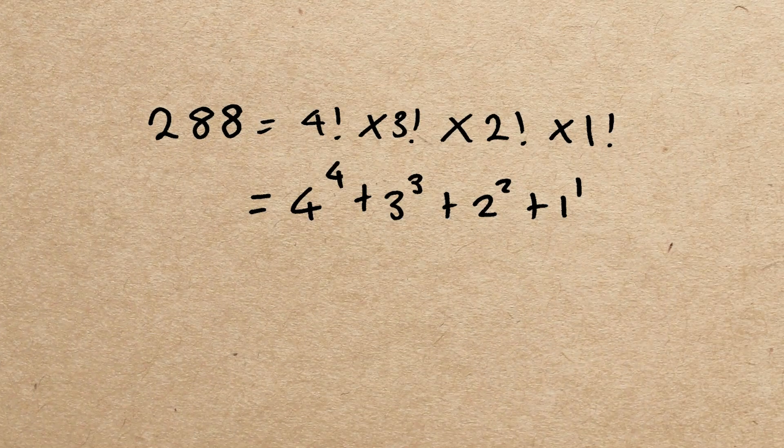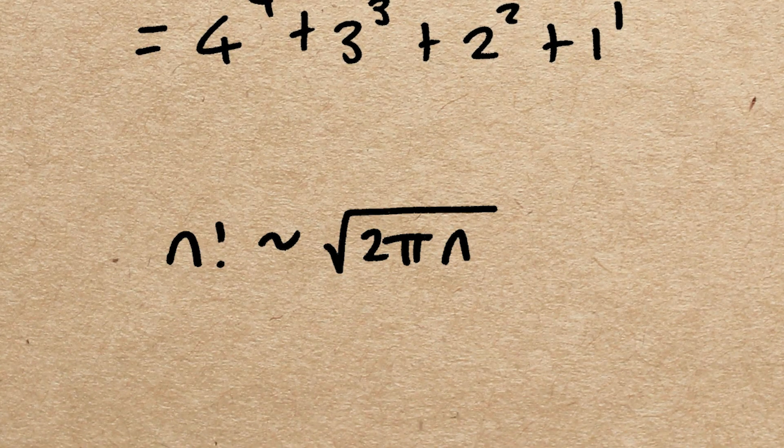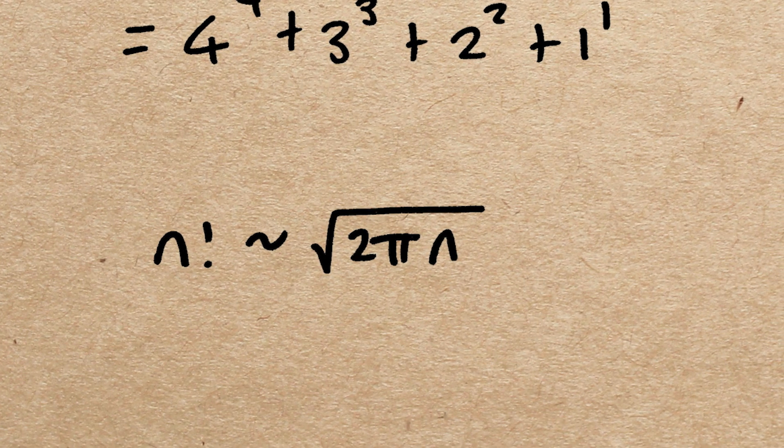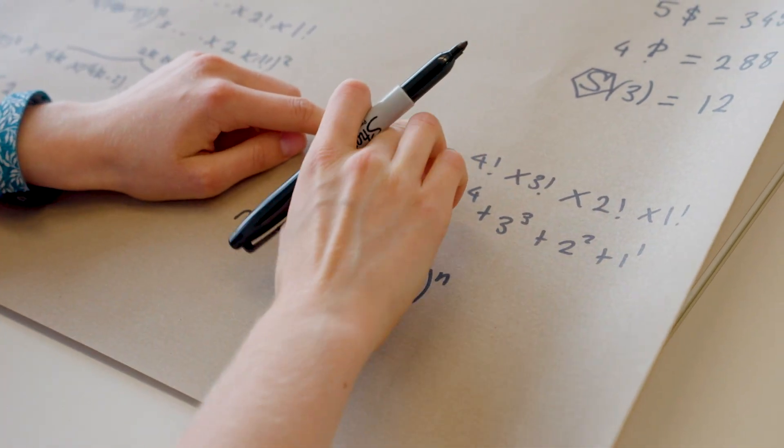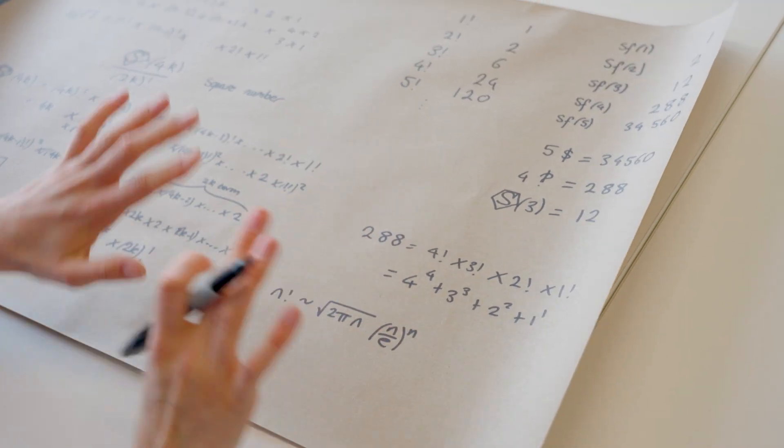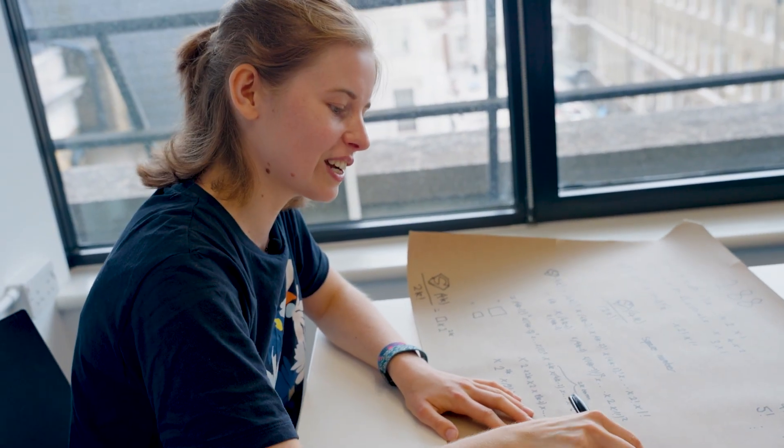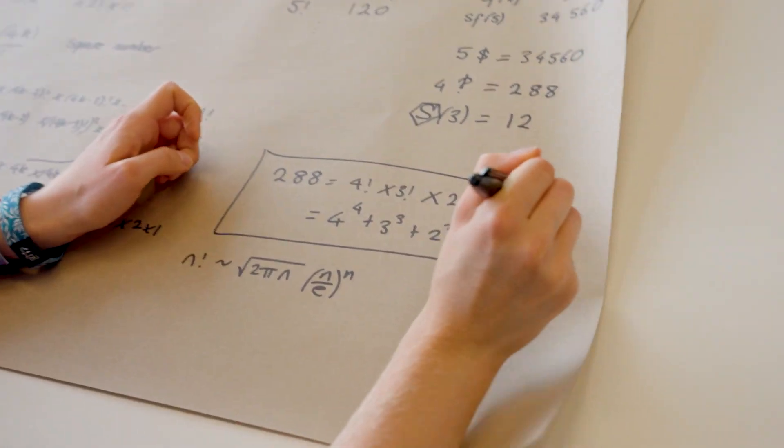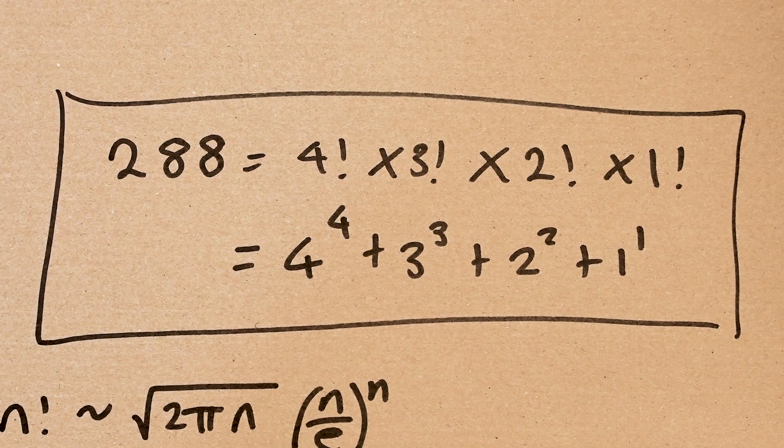It's the only number that this happens for. And we can kind of show this if you want to get all technical. n factorial roughly is the square root of 2 pi n, n over e to the n. So you can think multiplying n factorials together is going to look a bit like multiplying n to the n together. And here we're adding n to the n. So obviously these are going to grow faster than doing something like this. But anyway, we don't really need to look too much about that. We just need to look at the number 288 and appreciate that this is really cool. So that's why it's my favorite number.